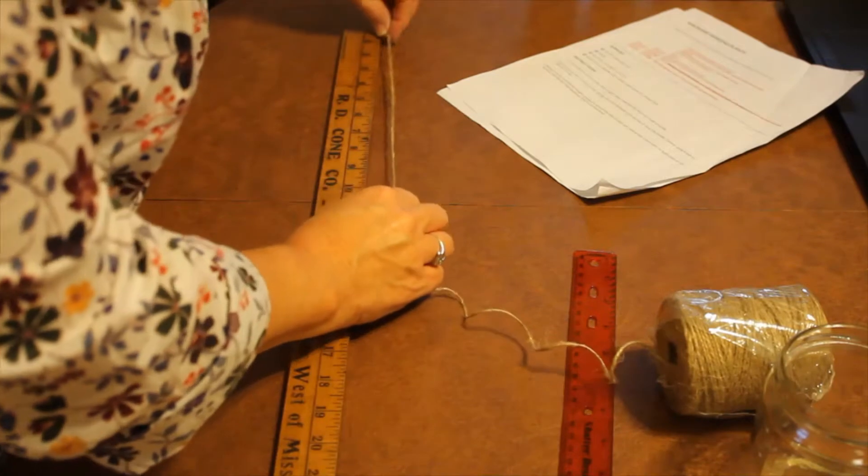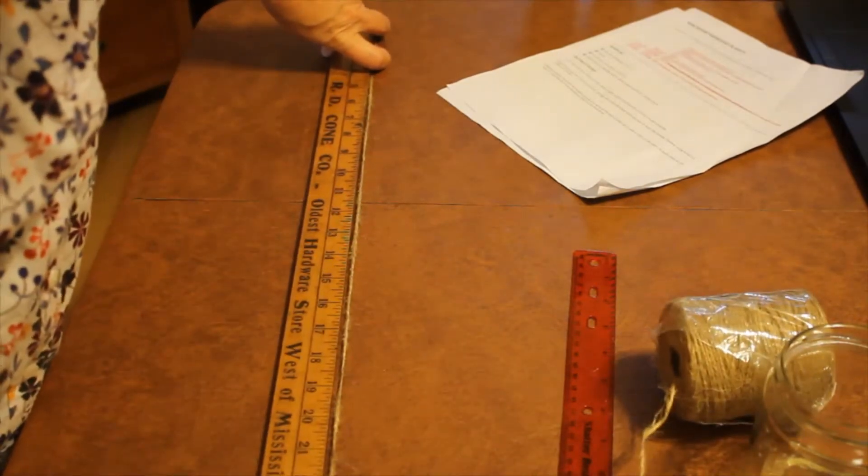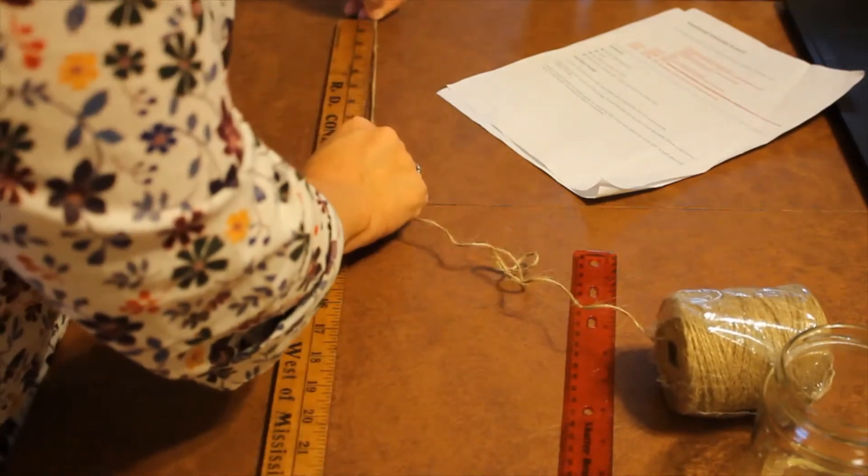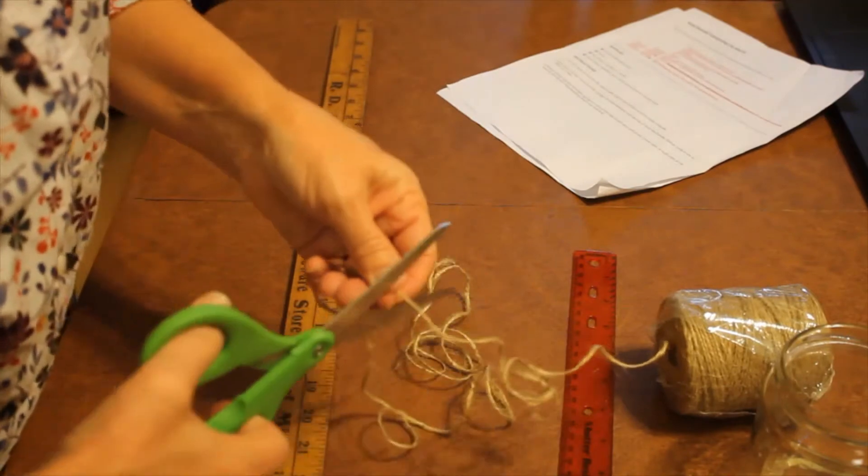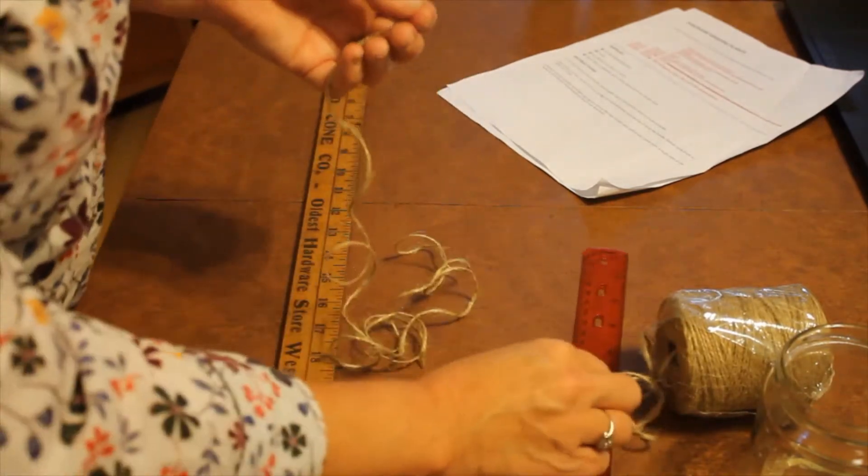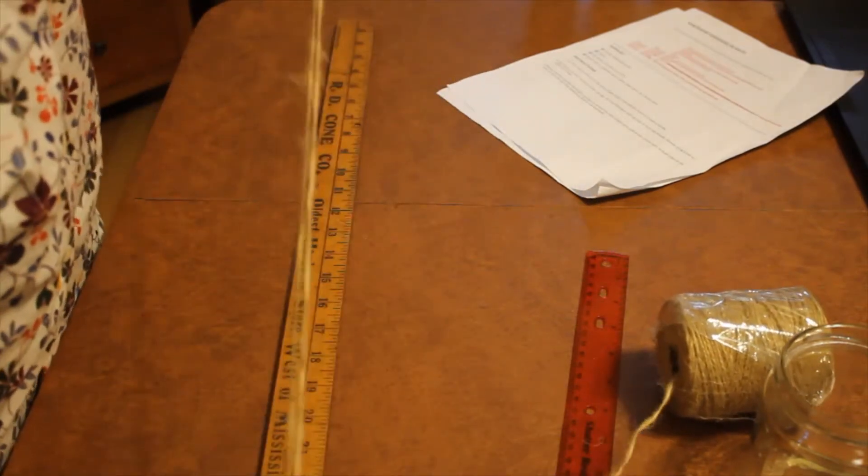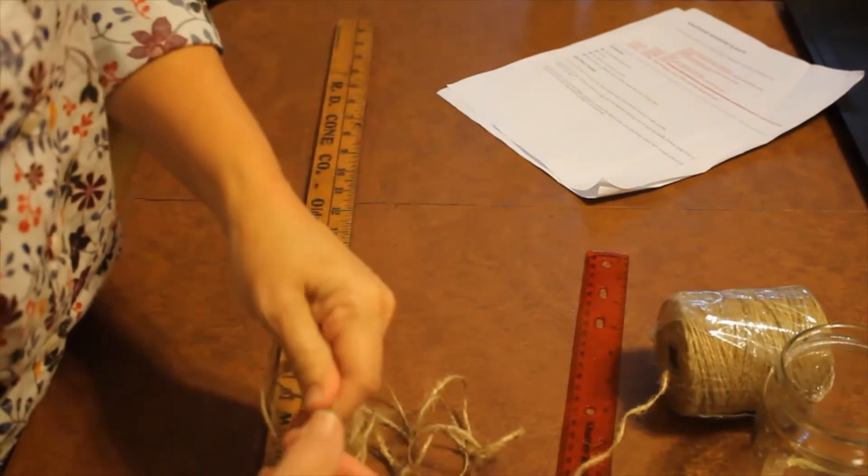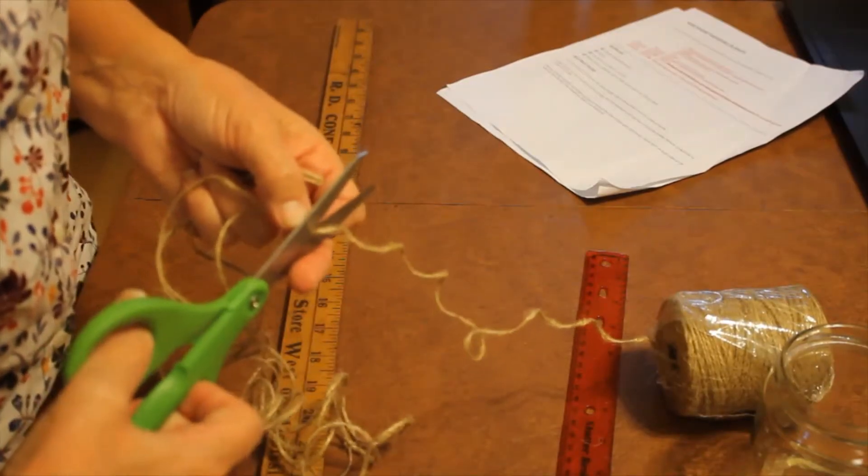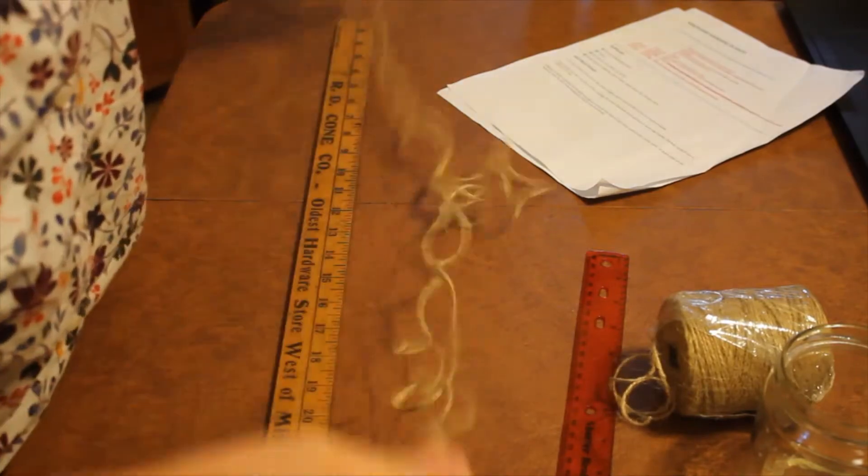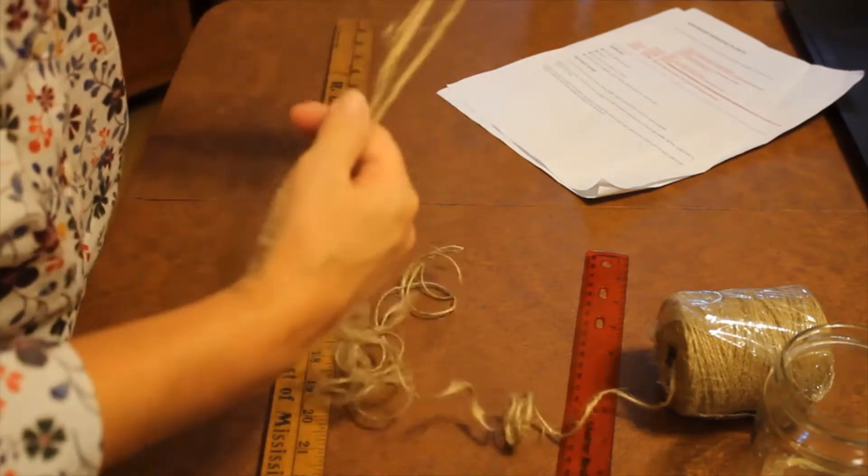So you should measure out, I am using a yardstick and I am going to measure out four feet of string to use. Once you get your four foot string, then you can simply just take your other string and measure it. Now I've provided you with four four foot strings in your craft kit.